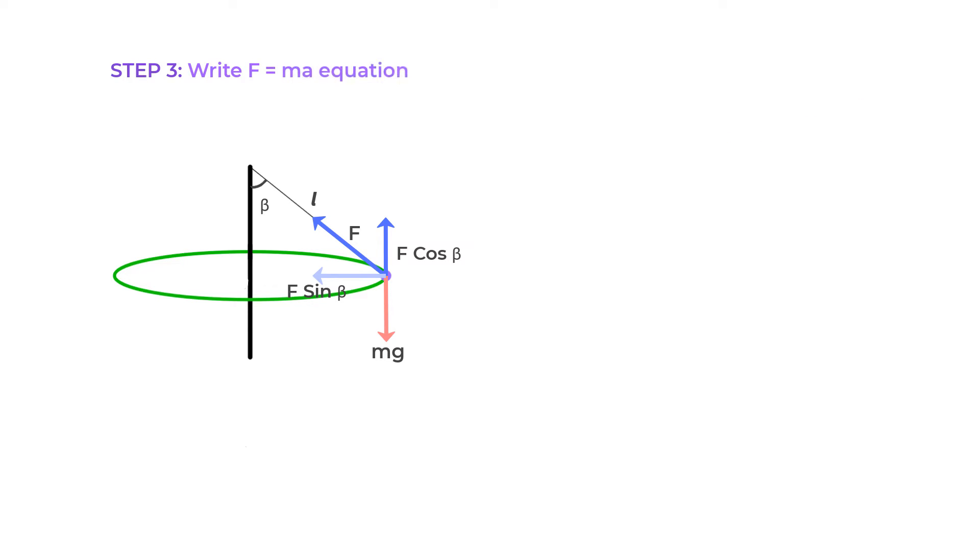In step three, we will write the F equals MA equation for x and y directions. So we will first write the equation for the y axis where F cos beta minus MG equals zero. And it is zero on the right hand side because the ball is not moving vertically and therefore acceleration A is zero.